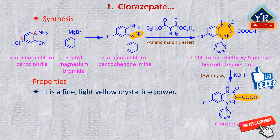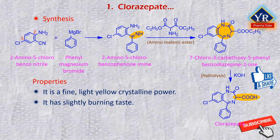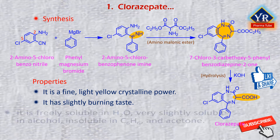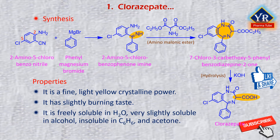Chlorazepate is a fine, light yellow crystalline powder with a slightly burning taste. It is unusual among benzodiazepines in that it is freely soluble in water, very slightly soluble in alcohol, and insoluble in benzene and acetone. Its aqueous solutions are unstable, and it is sensitive to exposure to light, moisture, and excessive heat.